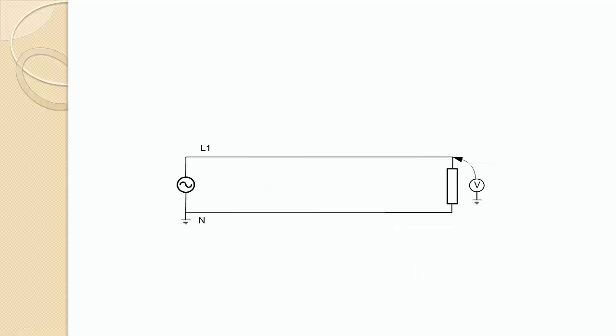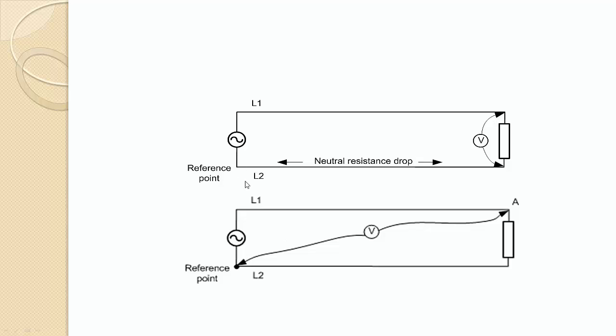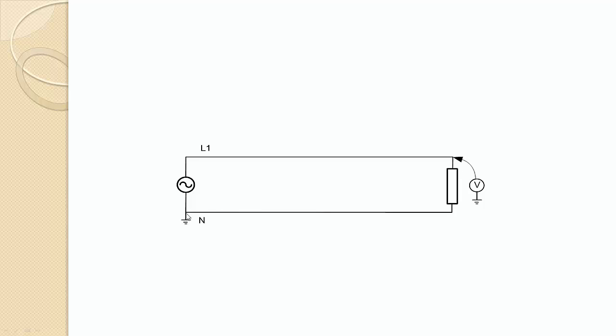But if we connect the reference point to earth, we can measure the voltage at any point by measuring the voltage at that point with respect to the earth. For example, you see here, the same circuit before here. What I have done is I have earthed at this point. You can see that I have earthed at this point to the earth. That means this point will be at the potential of the earth.